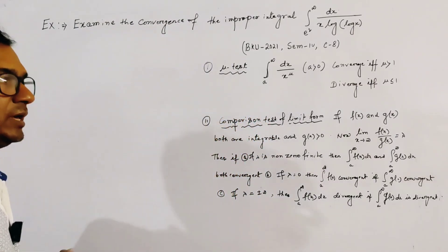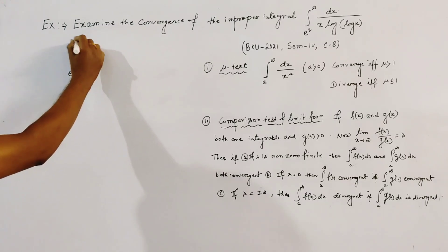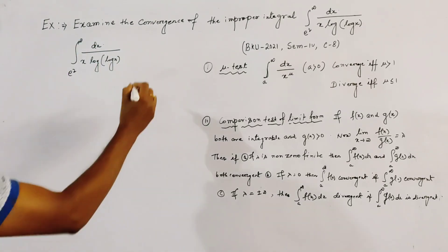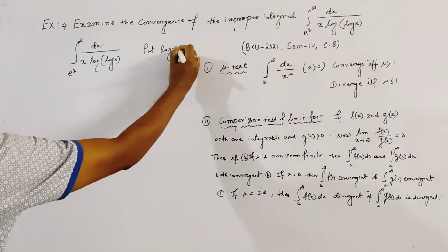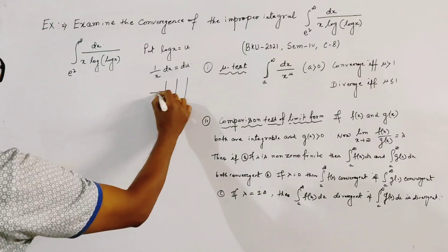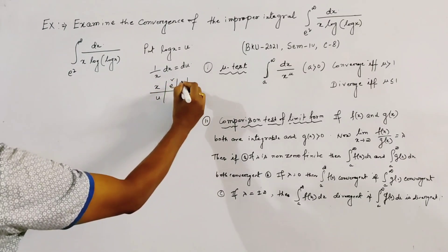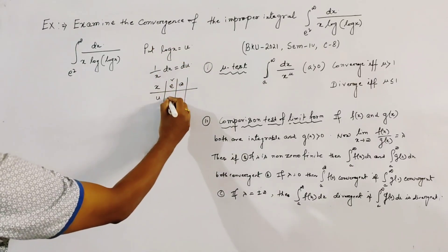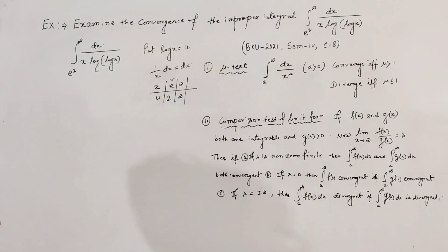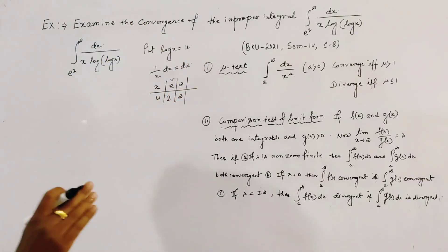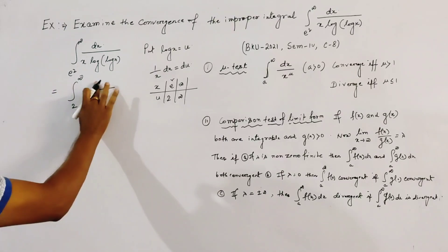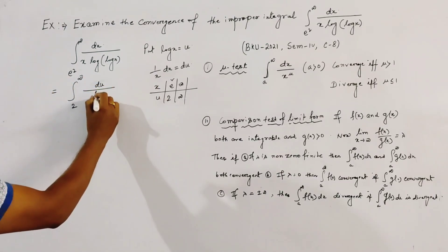The given integration is the integral from e-squared to infinity of dx over x times log of log x. We substitute u = log x, so that (1/x) dx = du. Changing the limits: when x = e-squared, u = 2 log e = 2; when x = infinity, u = log(infinity) = infinity. So the limits change from 2 to infinity.